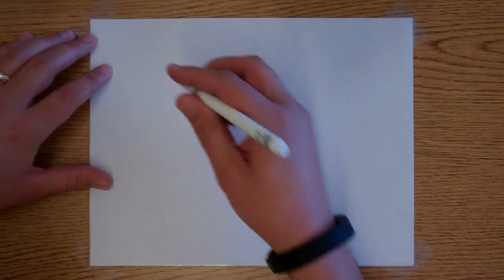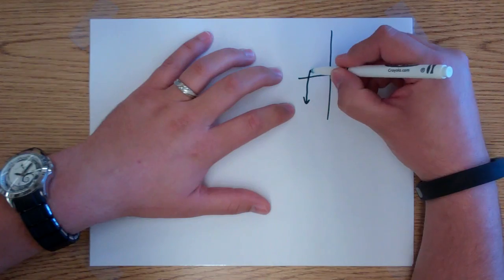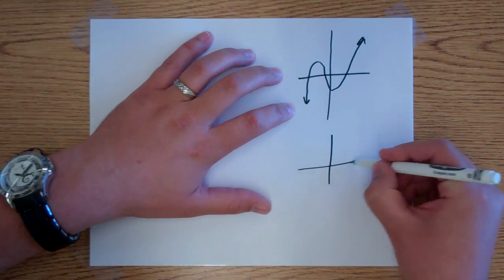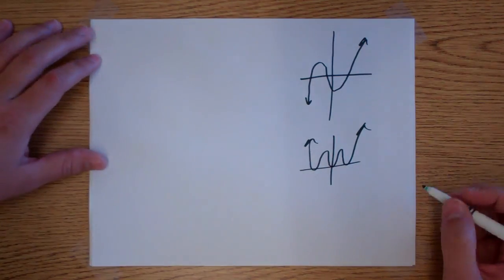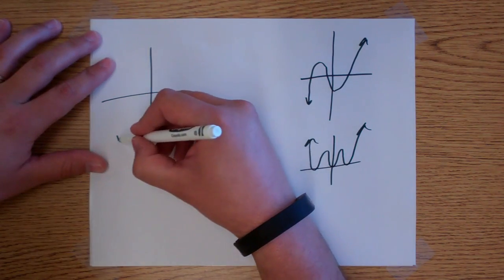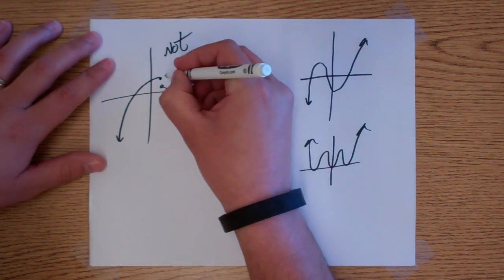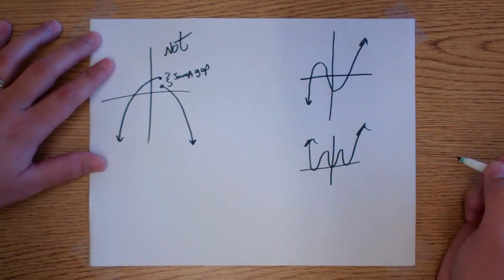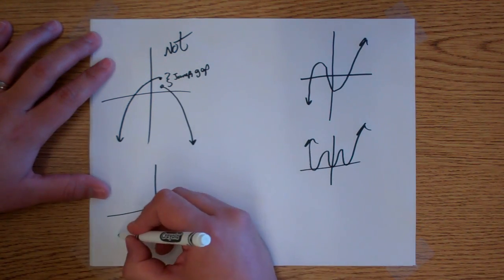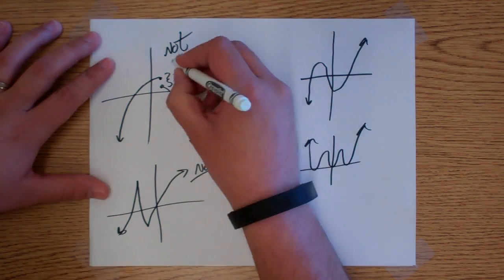So what do the graphs of polynomial functions look like? The graphs of polynomial functions are simply smooth curves. If you look at a graph and it has a break or a jump — a gap — this is not a polynomial. Also, polynomials don't have sharp corners, so a graph with a sharp corner is also not a polynomial.